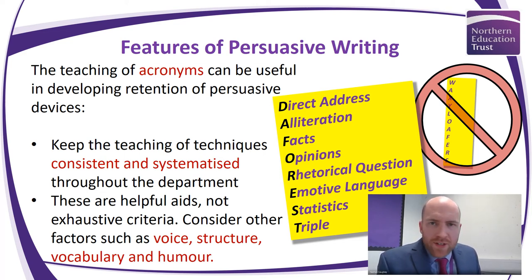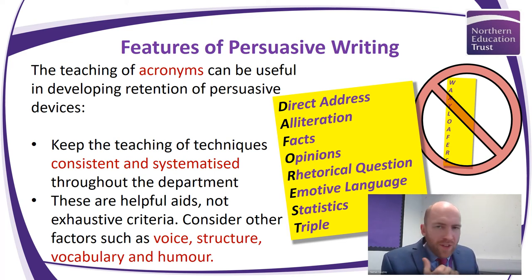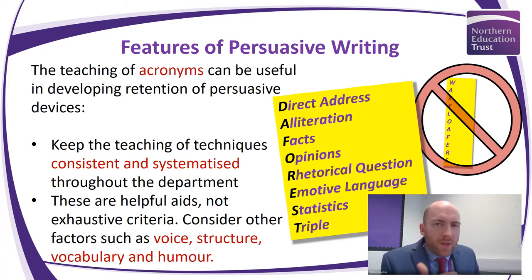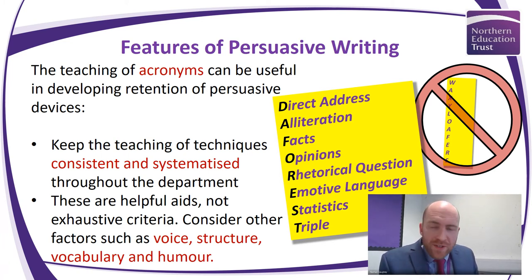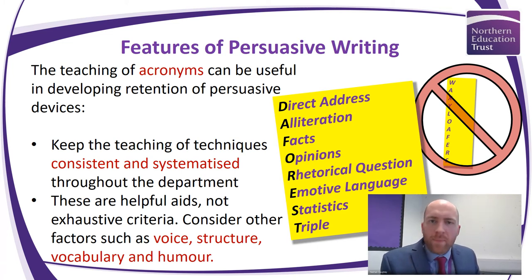Remember these are helpful aids — they are not a list of criteria. The problem is that in a subject which is very abstract, these techniques are a concrete thing we can grasp. Some people say 'I want two facts, three opinions, one statistic' — this can be restrictive. Yes, we want to teach these techniques, but they shouldn't be the main focus of persuasive writing teaching. Don't have a lesson purely on alliteration or opinions — students will have done that in primary school.